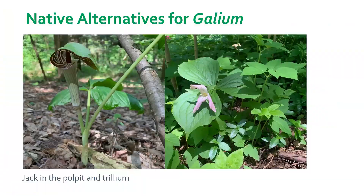A couple of understory plants that would be good alternatives are Jack in the pulpit, which has a really unique spadix flower, and it has trifoliate leaves similar to trillium. On the right there's white trillium — there are also painted ones and red ones. You can see the trillium on the right is being overtaken by a couple of invasive species: periwinkle down there, and some Bishop's weed, also known as goutweed, which we'll cover coming up.